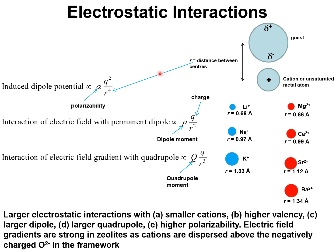Let us examine the electrostatic interactions between a gas molecule and the extra framework cation. Cations that can be either lithium, sodium, potassium, magnesium, calcium, strontium or barium.